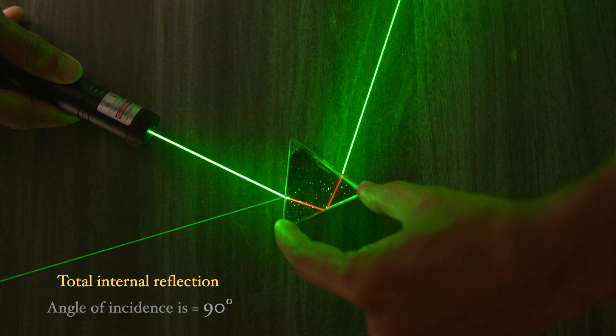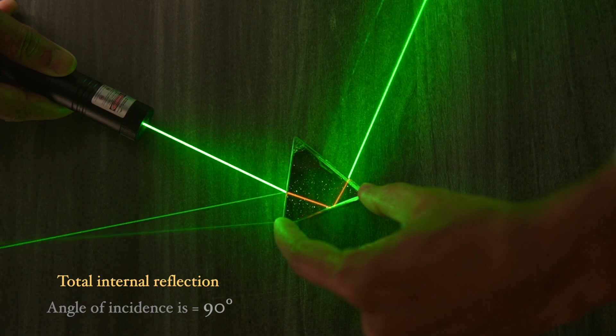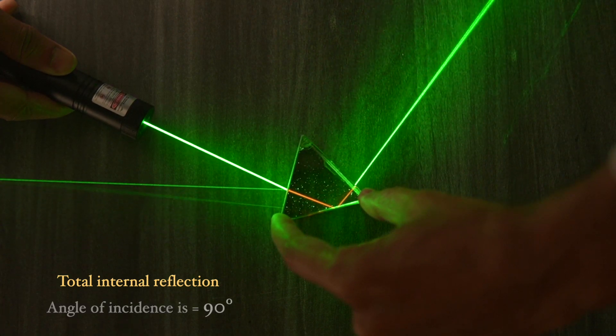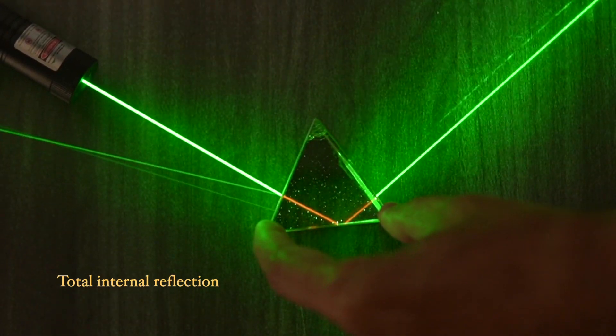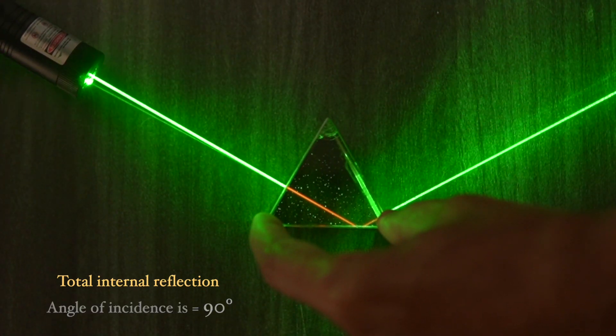But if we increase the angle of incidence to 90 degrees, the total light ray will reflect back to the same medium. This phenomenon is called total internal reflection.